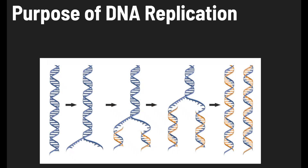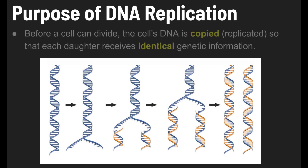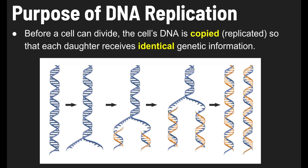What is the purpose? Before a cell can divide, the cell's DNA is copied or replicated so that each daughter cell receives identical genetic information. The purpose is to make an identical copy for each daughter cell.